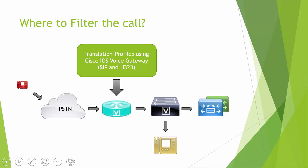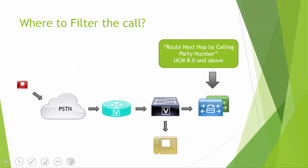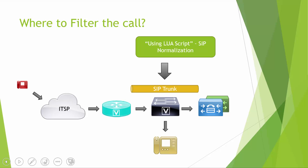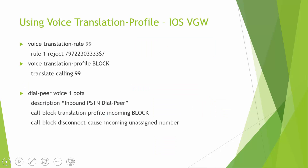Here is what we discussed in the previous video: how we can do call filtering in an IOS voice gateway using translation profiles and rules. The second method we discussed is using route to the next stop by calling party number, which works on CUCM 8.0 and above. Let me talk about the configuration steps involved, and when we get to the second method I'll explain the caveat with it.